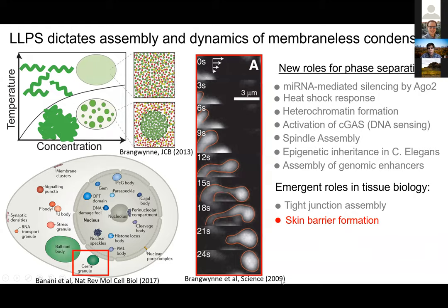This turning point back in 2009 — a pioneering Science paper — really got people thinking about liquid-liquid behaviors within cells. Over the last five to seven years, there's been a lot of excitement around interpreting these phase separation events in the cell in intriguing mechanisms like microRNA-mediated silencing, heat shock response, assembly of heterochromatin, DNA sensing, spindle assembly, assembly of genomic enhancers, and more recently emerging roles in tissue biology — particularly collagen assembly and skin barrier formation. This idea of phase separation-driven processes playing a role inside cells is really touching many different aspects of biology.